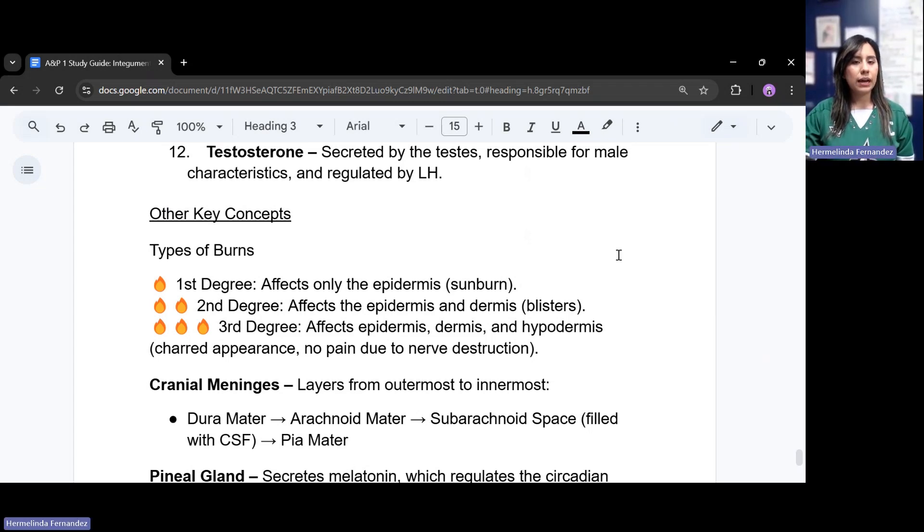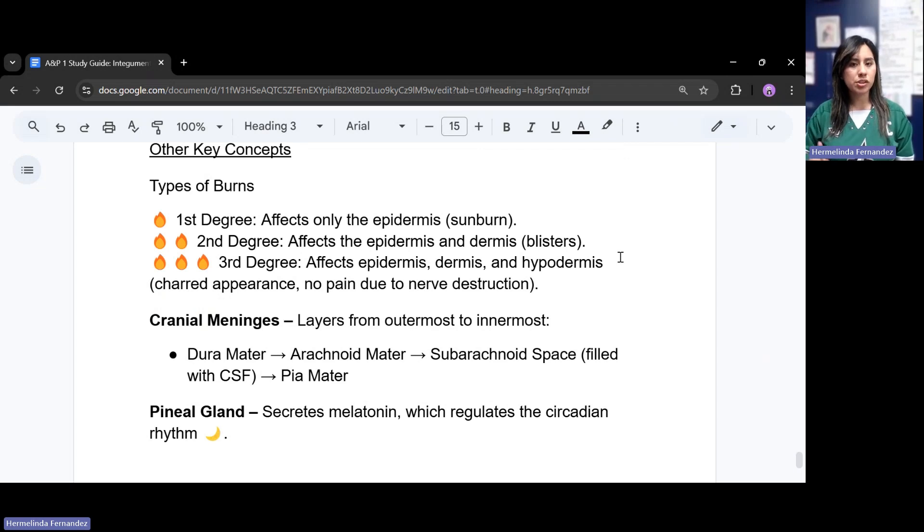Other concepts, we have burns. Make sure you know the types of burns. We have first degree, this affects only the epidermis. Epi, remember epi is the top, dermis, the dermal layer, so sunburn. First degree would be that sunburn. Second degree affects the epidermis and the dermis. You're going to see those blisters on that layer. Third degree affects the epidermis, dermis, and the hypodermis. You have the epi, which is high, the dermal layer, and hypo, which is low, below the dermis. So hypodermis, you're going to have a charred appearance, no pain because all those nerves have been destroyed.